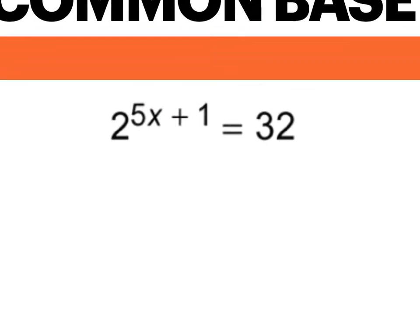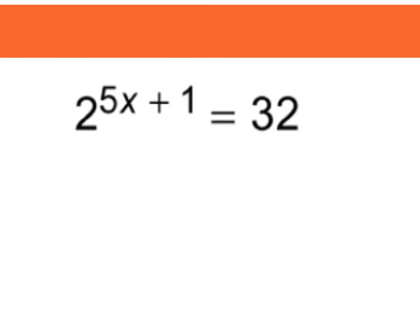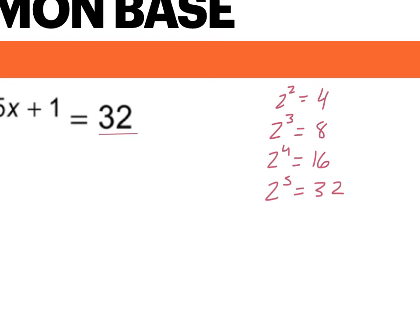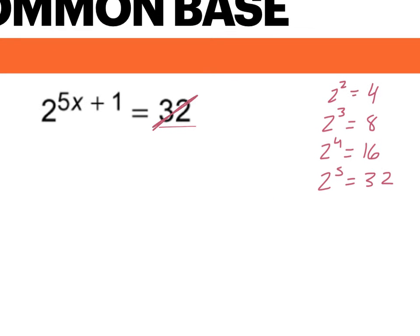The next example we're going to solve the same way. 2 is already broken down as much as it can go, but we can get 32 to have the base of 2, so then we can cross them off. If we know that 2 squared is 4, 2 cubed is 8, 2 to the fourth is 16, 2 to the fifth would be 32. So we can change this 32 to become 2 to the fifth power.